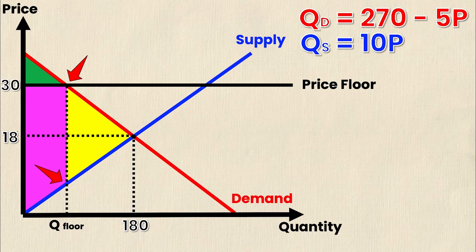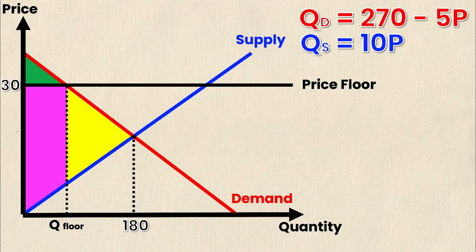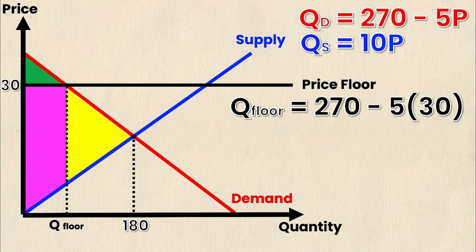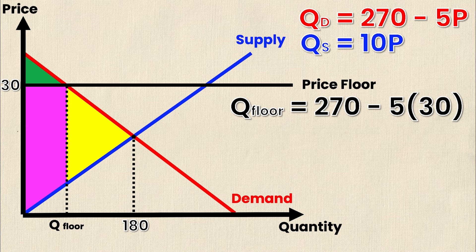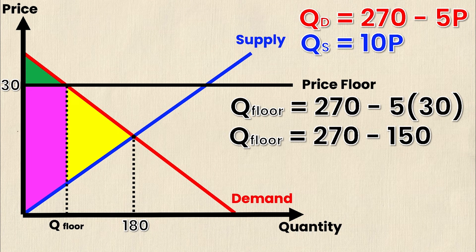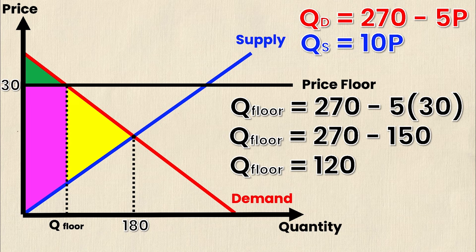Because we're no longer in equilibrium we don't actually need that 18 anymore, so I'm going to clear it out of the way. The first thing we're going to do is calculate the intersection of the demand curve with the new price floor, and how we do that is by subbing in the price floor into the demand equation. So we have Q floor equals 270 minus 5 times 30. That 30 is the price floor value. Simplifying this we get 270 minus 150, and that gives us a value for Q floor of 120 units.